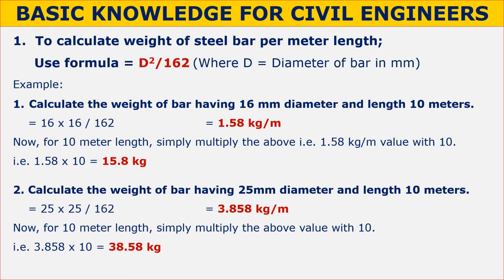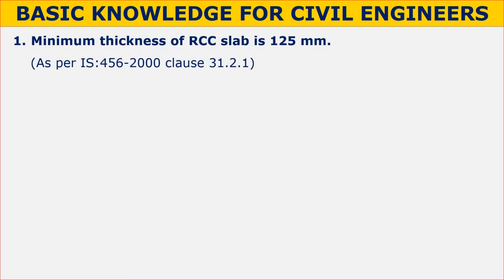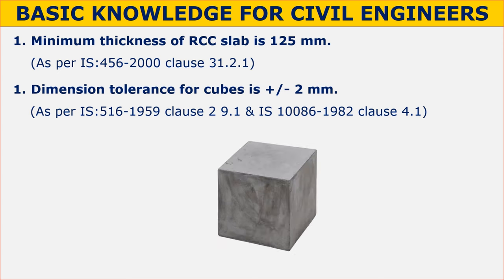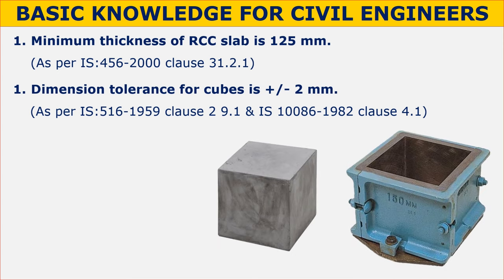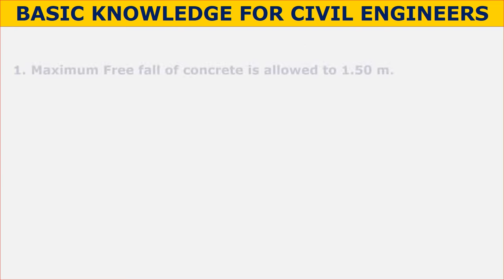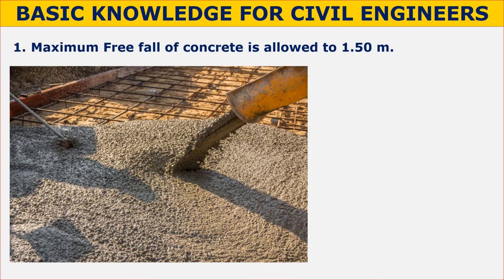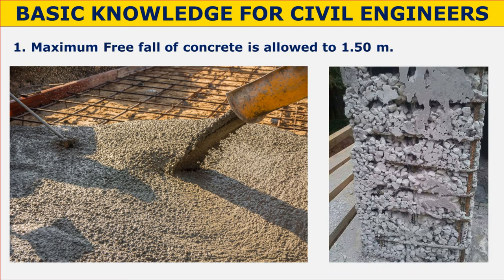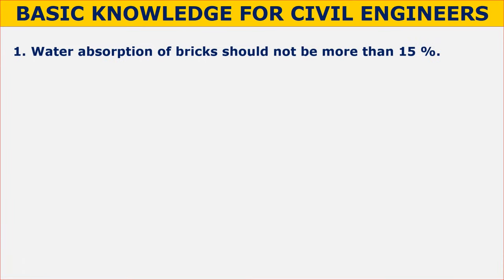The minimum thickness of an RCC slab is 125 mm. The dimension tolerance for cubes is ±2 mm. As per IS 516:1959 and IS 10086:1982, the standard cube size is 150 mm × 150 mm × 150 mm. The maximum free fall of concrete allowed is 1.5 meters as per IS code; if concrete is dropped from a greater height, it becomes very difficult to prevent segregation and displacement of reinforcement, and it can also damage the formwork faces.